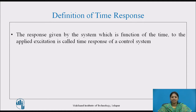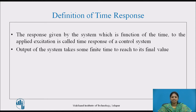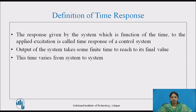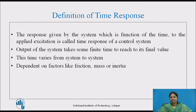The response given by the system, which is a function of time, to the applied excitation is called the time response of a control system. In any practical system, the output takes some finite time to reach its final value. This time varies from system to system and is dependent on many factors. The final value achieved by the output also depends on different factors like friction, mass or inertia of moving elements, and some non-linearities present.